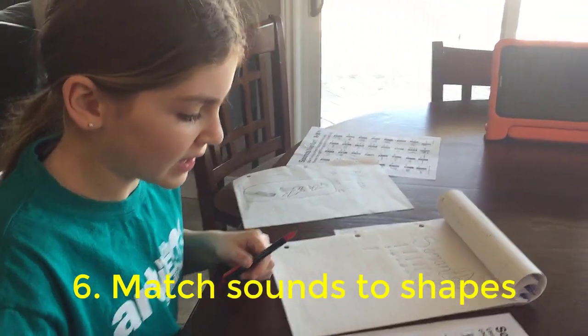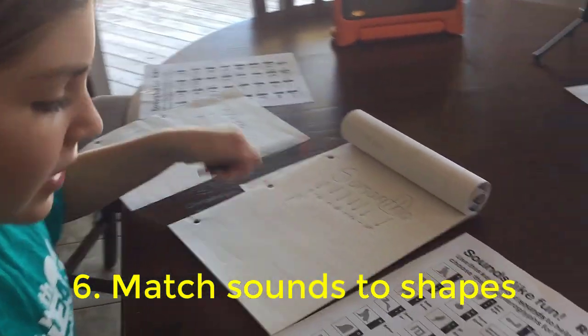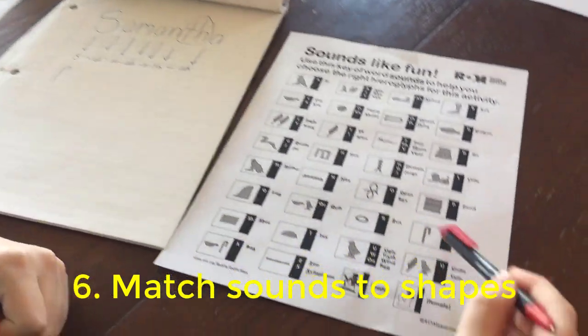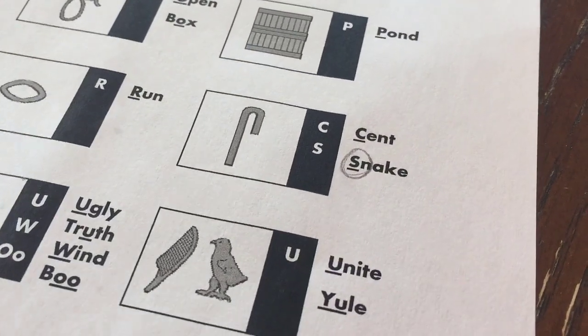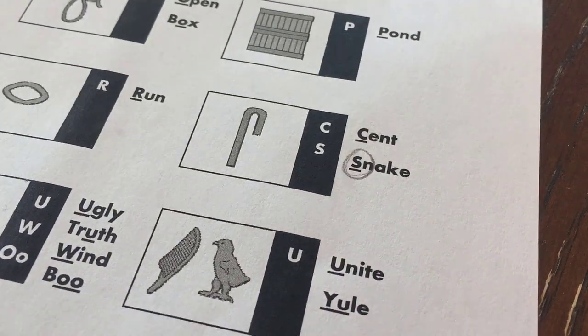Then what you're going to do is find any of the sounds, so example for S, over here, you'd look over here, and it's that one. So you draw that shape, and you keep doing it until you're done.